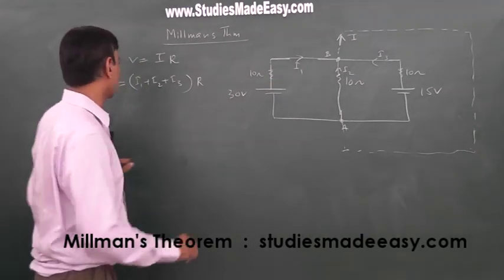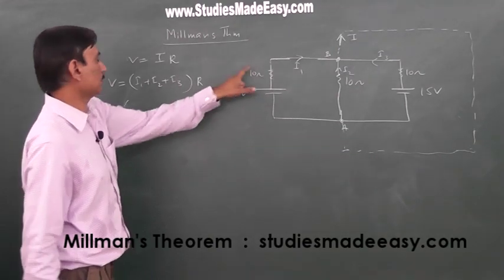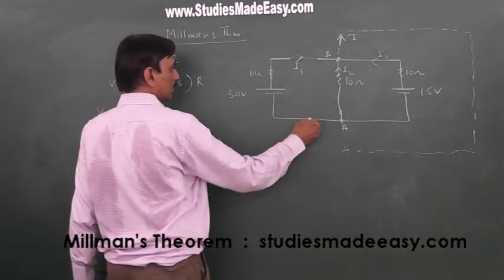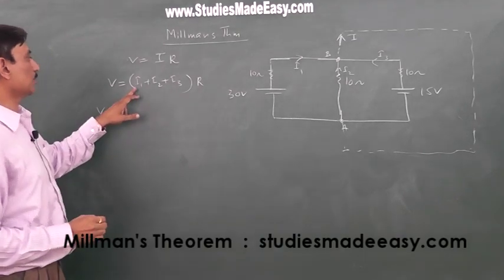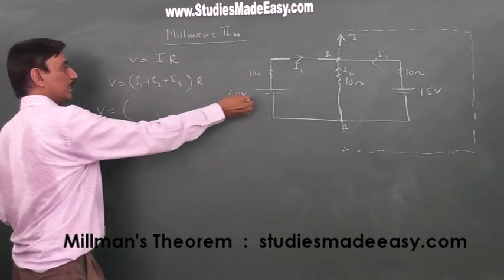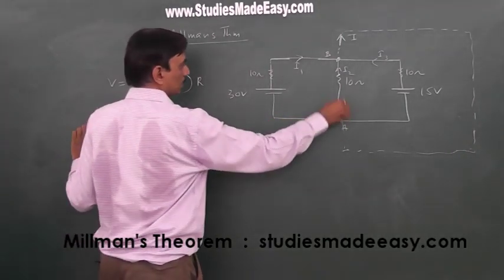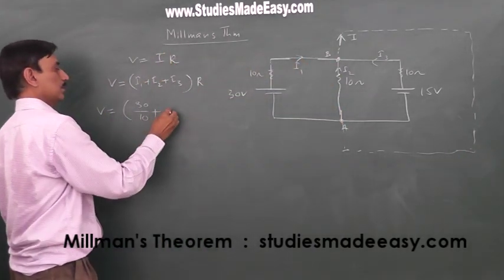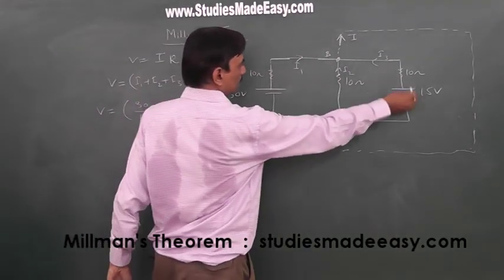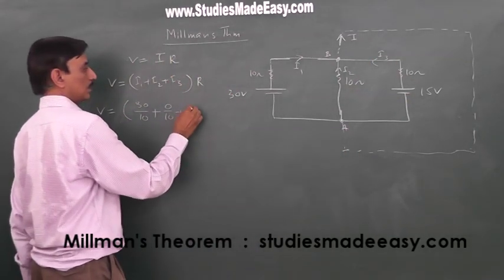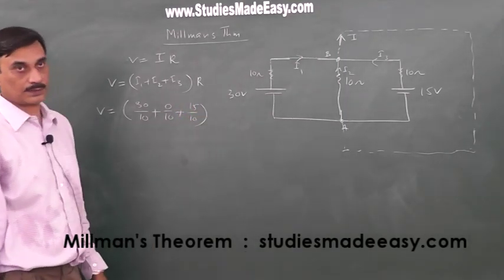So, now what is I1 value? V by R. Just take this, this R. I equals V by R. I1 equals V by R. V is 30. Plus for this, there is no value. Plus for this, I3 is 16 by 10. Now, R equivalent. Don't consider batteries.